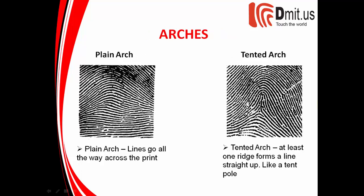The next type of fingerprint pattern is arches. There's what's called a plain arch and a tented arch. When you think of a tent, think of the tent poles that hold it up — there's a main center pole. The tented arch goes up, but you can see an area right in the center where there are ridges that extend up but don't come back down. The plain arch just looks like a nice little mound or a hill, where all the ridges go all the way across the print, nice and neat.